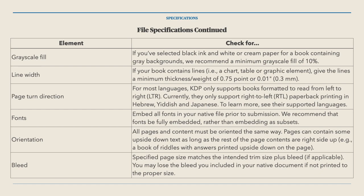Fonts: embed all fonts in your file — fonts should be fully embedded. Orientation: all pages and content must be oriented the same way. Pages can contain some upside-down text as long as the rest of the page is right side up — a book of riddles with answers printed upside down is a good example. Bleed is mentioned again: your specified page size must match the intended trim size plus bleed if applicable.